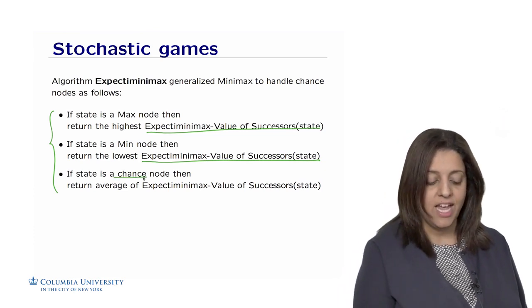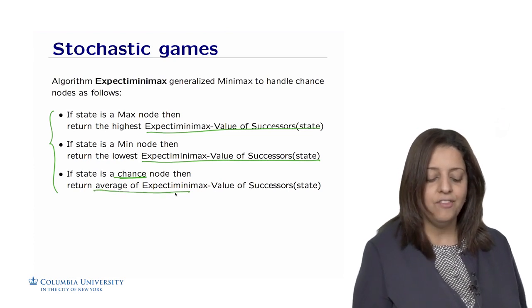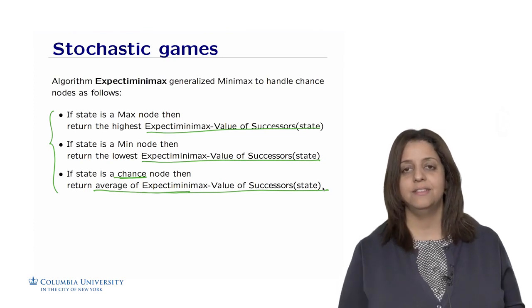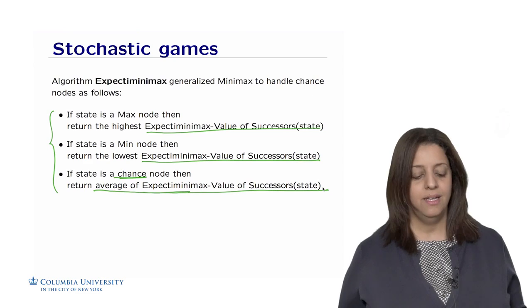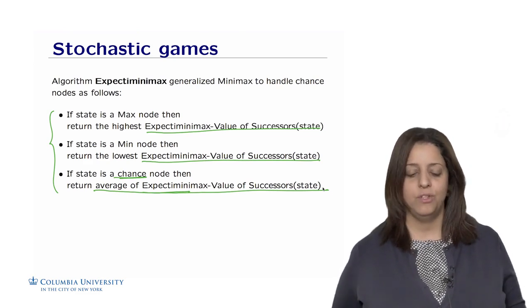But if the state is a chance state, then we call expected minimax and return the average of the value of the successors. We know that there will be different outcomes with different probabilities. So we weigh that by the probability of each outcome to happen and get the expected value of those outcomes.